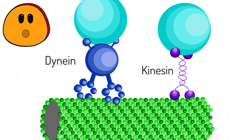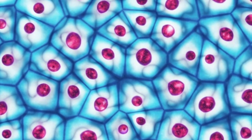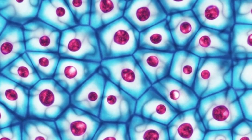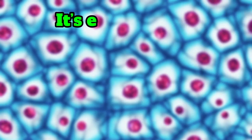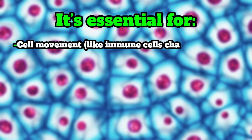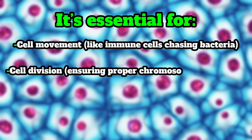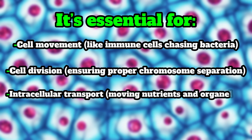Why is the cytoskeleton important? Without the cytoskeleton, cells would be shapeless blobs, unable to move, divide, or transport materials. It's essential for cell movement like immune cells chasing bacteria, cell division ensuring proper chromosome separation, intracellular transport moving nutrients and organelles, and maintaining shape and structure.